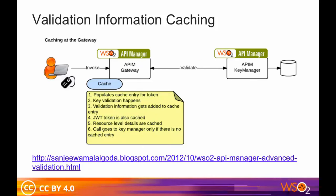Validation information caching at the API Gateway level: when caching is enabled at the gateway and a request hits the gateway, it first populates the cache entry for a given token. If a cache entry does not exist in the cache, it calls the KeyManager server. This process is carried out using Web Service calls. Once the KeyManager server returns the validation information, it gets stored in the gateway. Because the API Gateway issues a Web Service call to the KeyManager server only if it does not have a cache entry, this method reduces the number of Web Service calls to the KeyManager server, making it faster than the alternative method.